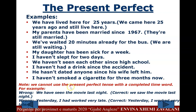Note: we cannot use the present perfect tense with a completed time word. For example, it's wrong to say 'We have seen the movie last night.' Correct: 'We saw the movie last night.' Similarly, 'Yesterday I had worked very late' is incorrect because 'yesterday' specifies exactly when the action ended. Correct: 'Yesterday I worked very late.' In that case, use the simple past tense.